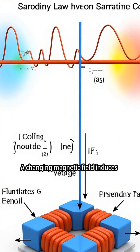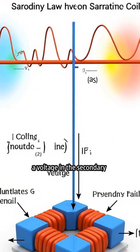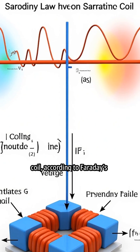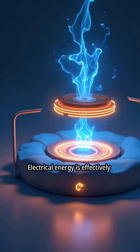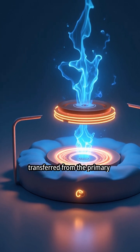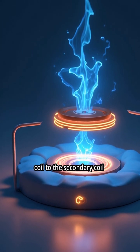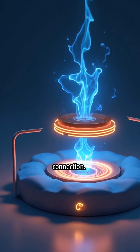A changing magnetic field induces a voltage in the secondary coil, according to Faraday's law of induction. Electrical energy is effectively transferred from the primary coil to the secondary coil without direct electrical connection.